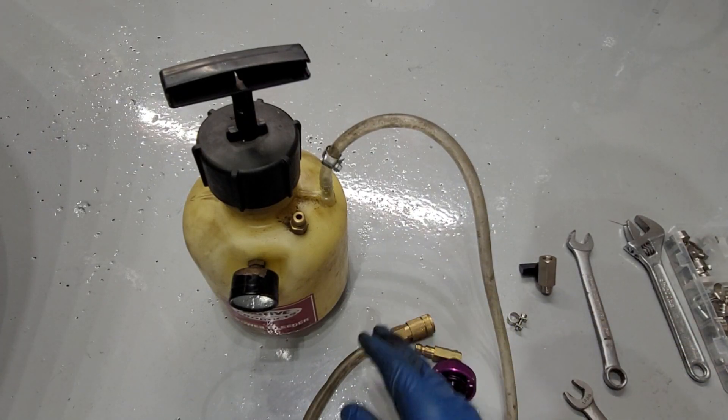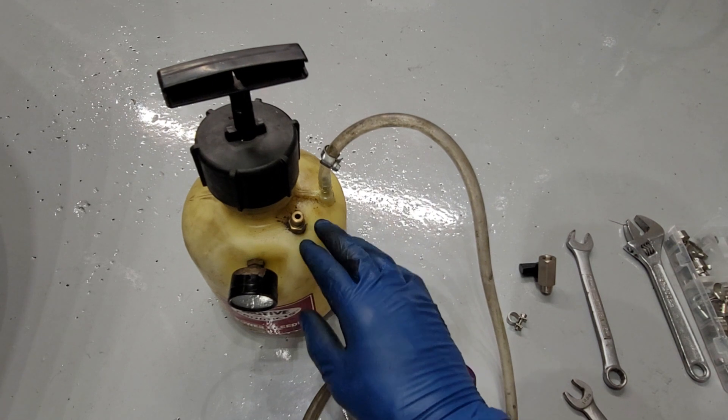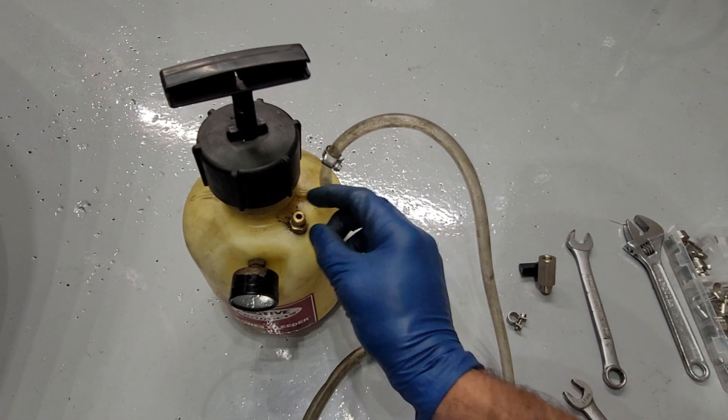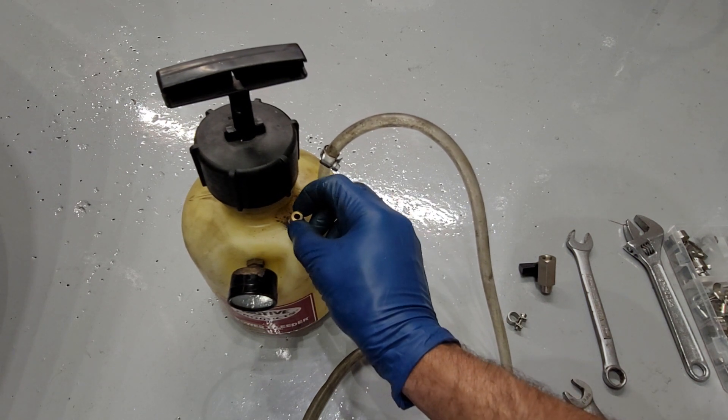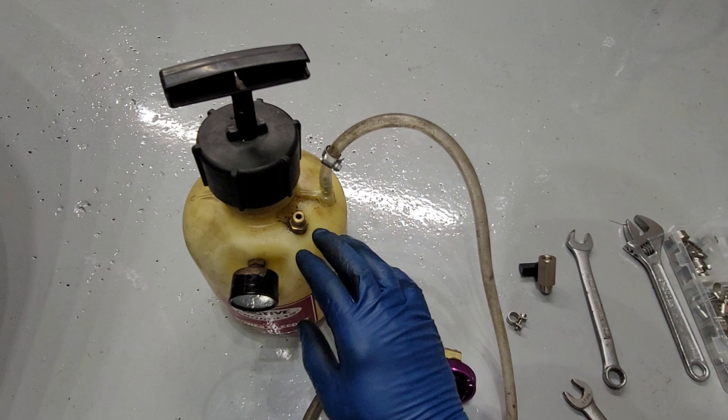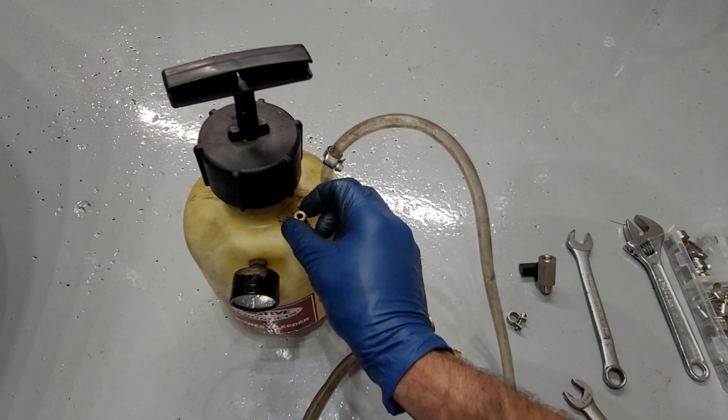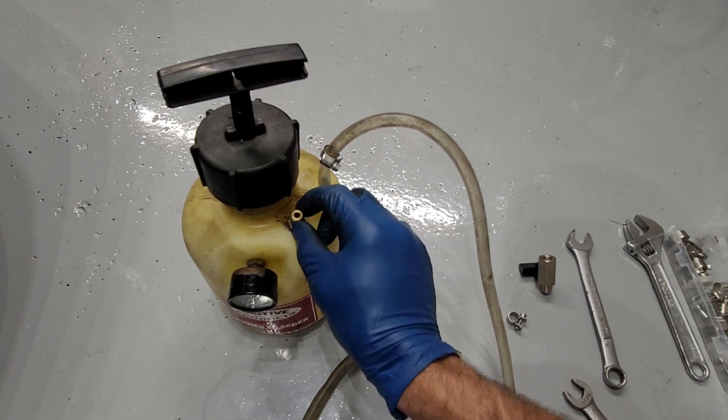I just want to share some modifications that I've done to this Motive power brake bleeder. The first one that I did was I added this tank vent valve, and what this does is allows you to relieve any pressure that's inside this vessel just by twisting this and it opens up this valve and air can escape.